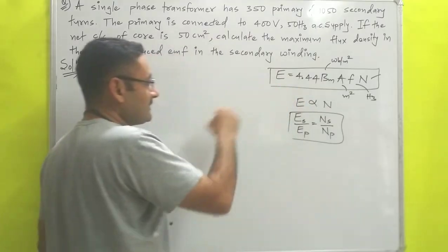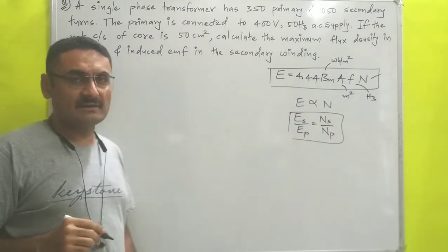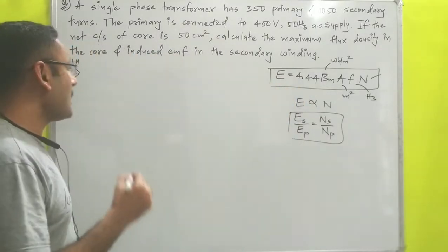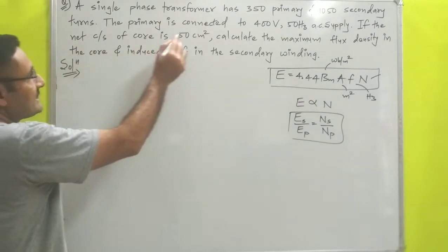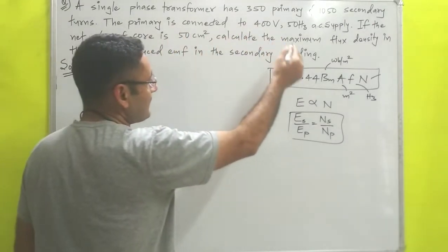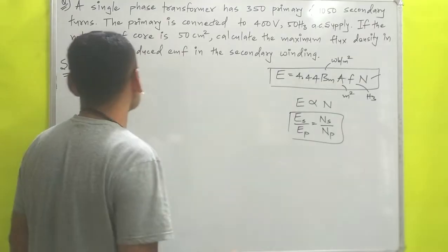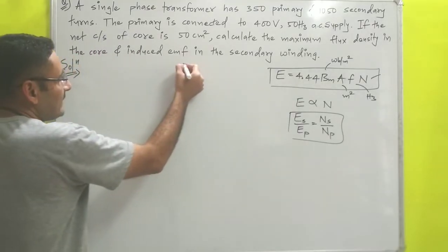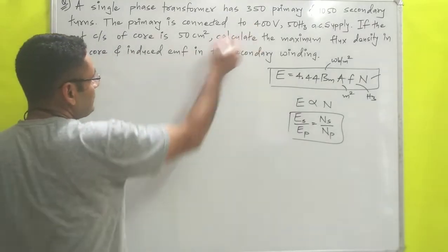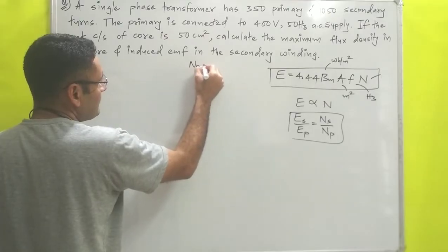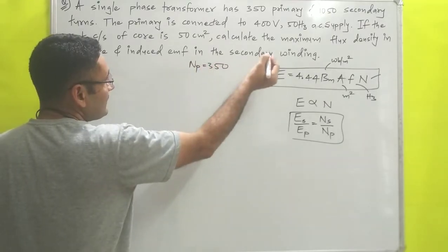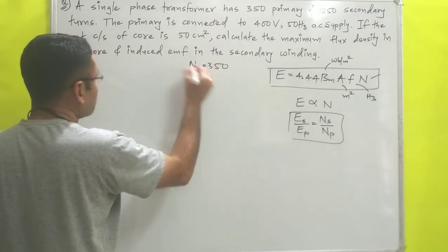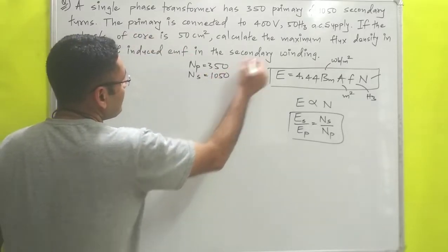To calculate this numerical, both of these equations are very important. Now I will read the numerical: A single phase transformer has 350 primary and 1050 secondary turns. So Np = 350 and Ns = 1050.